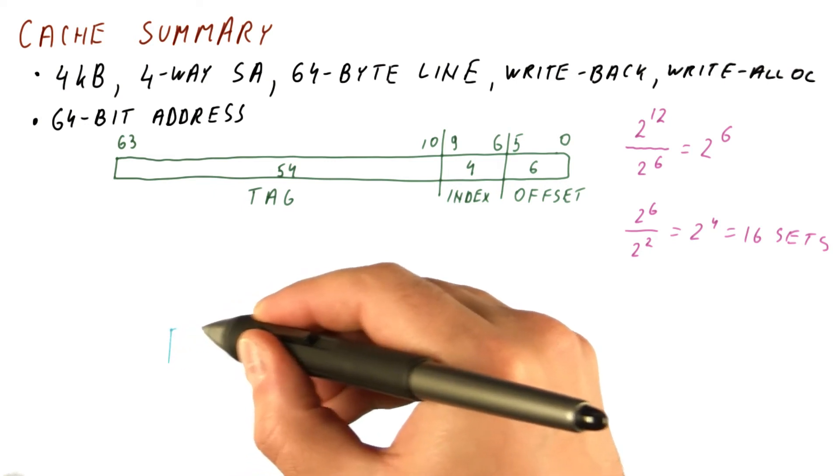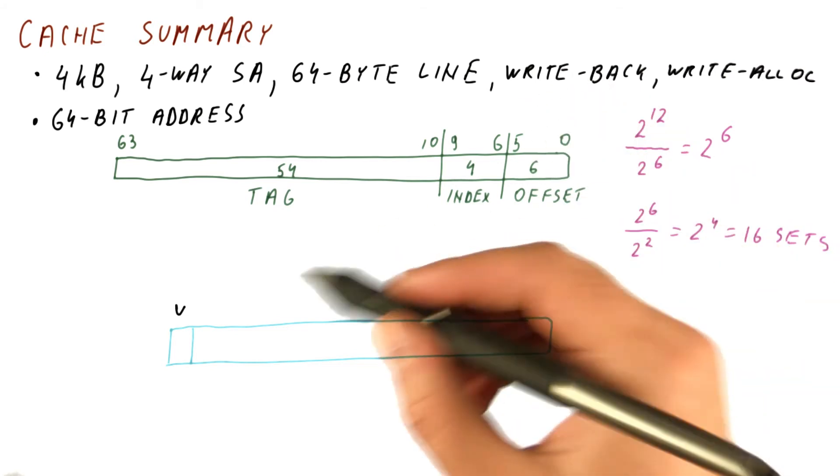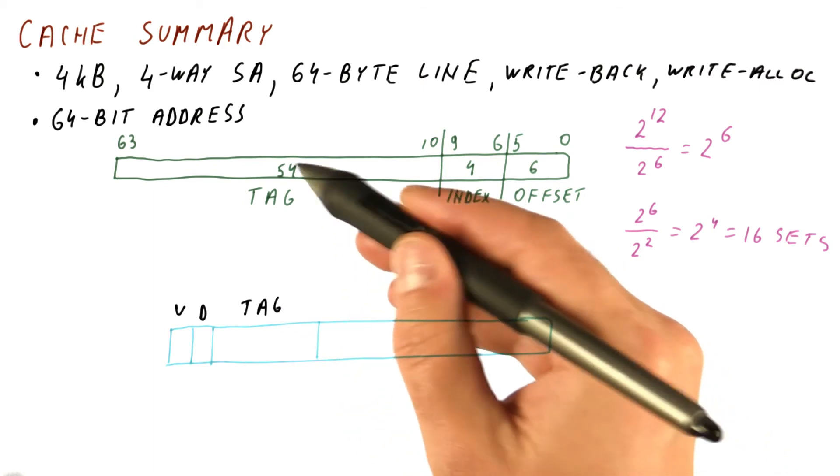Now in our cache, we will have, for each block, a valid bit. It's a write back cache, so we will also have a dirty bit. Then there will be a tag, 54 bits.